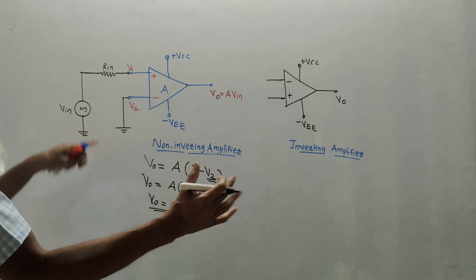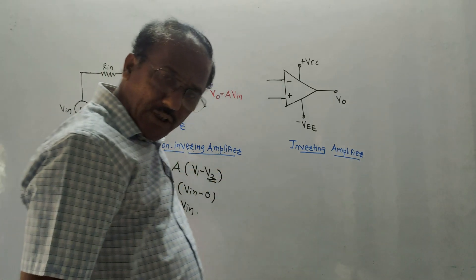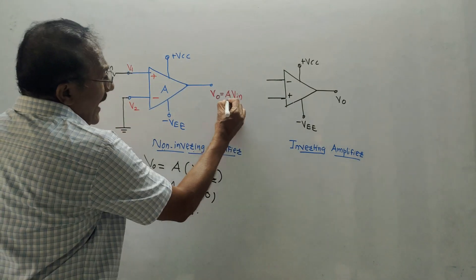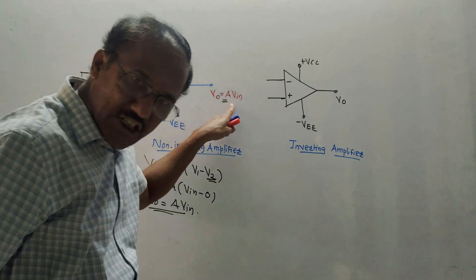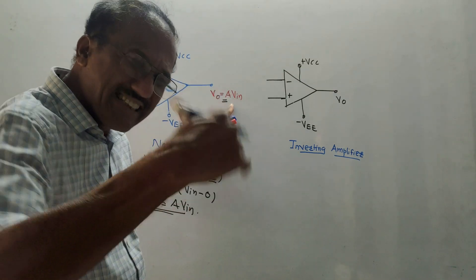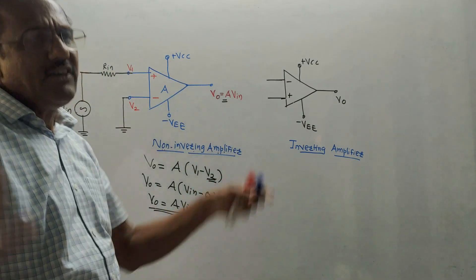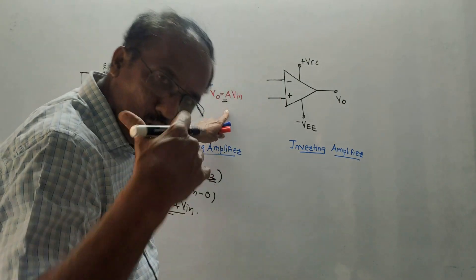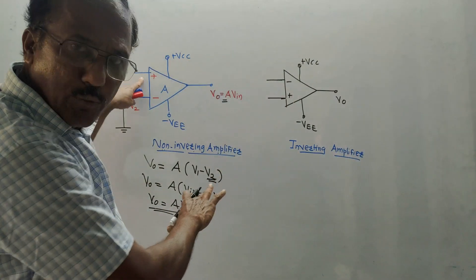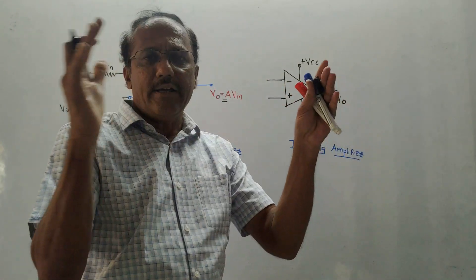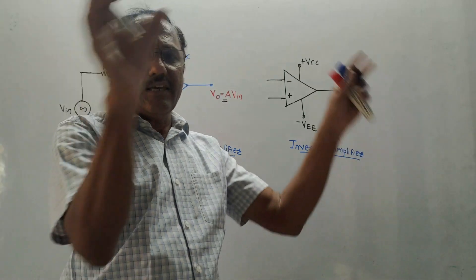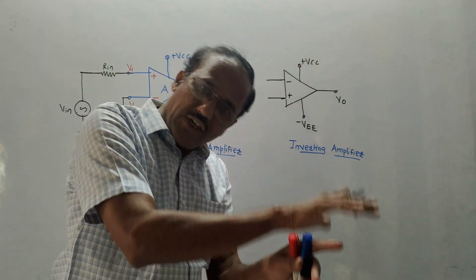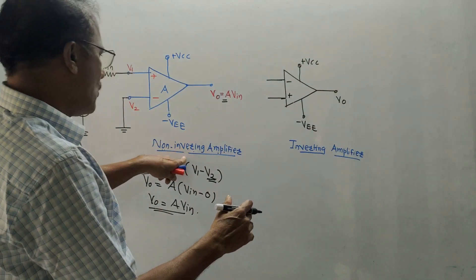Since the input is connected to the positive terminal, this is called a non-inverting configuration. At the output we get a positive output, plus A times VIN. So we can say: if input is connected to the non-inverting terminal, the output is positive, meaning output and input are in phase. If input is positive, output is also positive — technically, output is in phase with input.